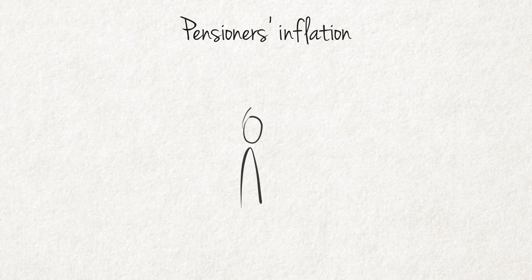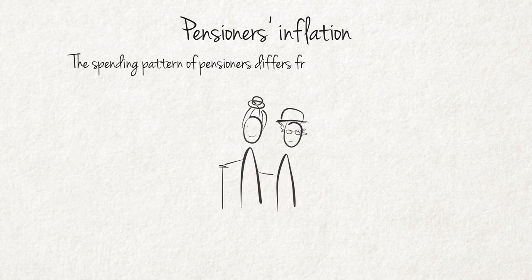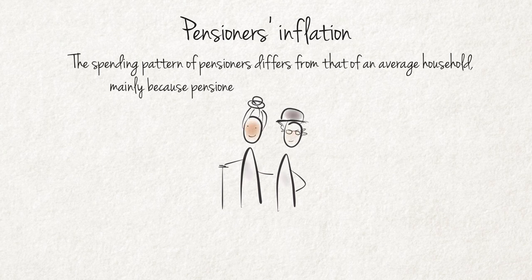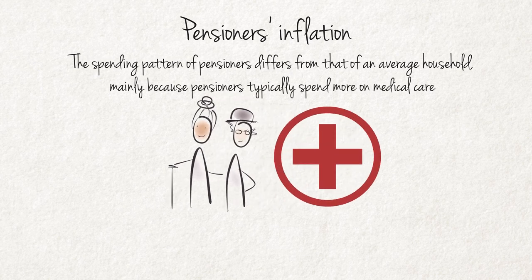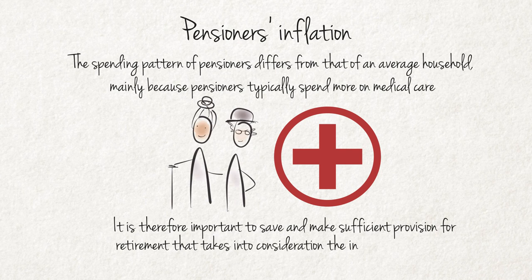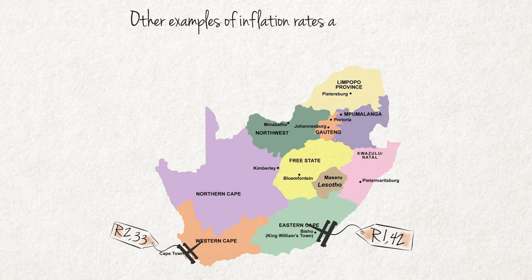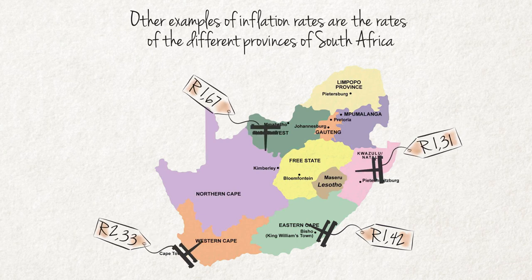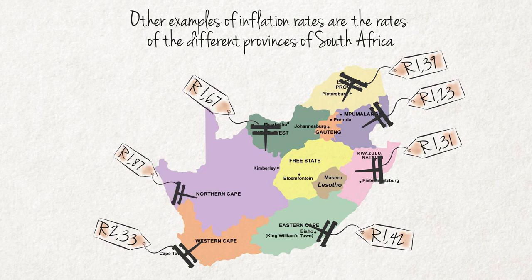Pensioners Inflation. An example of another rate of inflation is the pensioners inflation rate. The spending pattern of pensioners differs from that of an average household mainly because pensioners typically spend more on medical care. It is also important to remember that pensioners continue to face inflation, making it essential to save and make sufficient provision for retirement that takes into consideration the influence of inflation. Other examples include inflation rates for different provinces of South Africa and CPI excluding various cost items such as energy costs or administered prices.